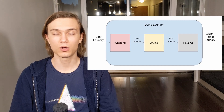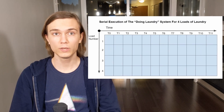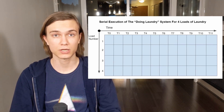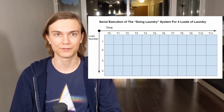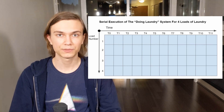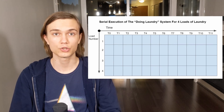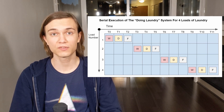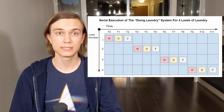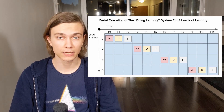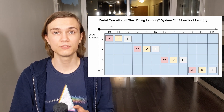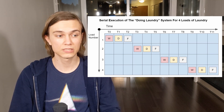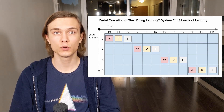Let's quickly run through an example of running this system. We need to do four loads of laundry and each stage takes the same amount of time. Time flows horizontally and the vertical axis represents which load is being worked on. Let's first talk about the completely unintuitive way of doing laundry: serial execution. A system executed serially will run each task from start to finish with no part of the system running in parallel. You do the washing, then the drying, then the folding for the first load, and only after you're done do you start the second load. If each stage takes 30 minutes, you would spend an entire six hours doing just four loads of laundry.